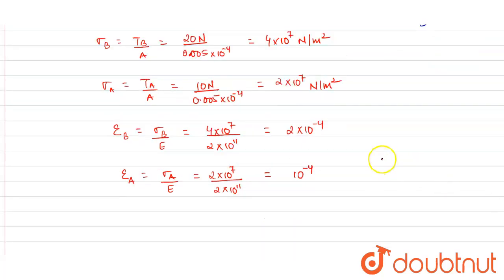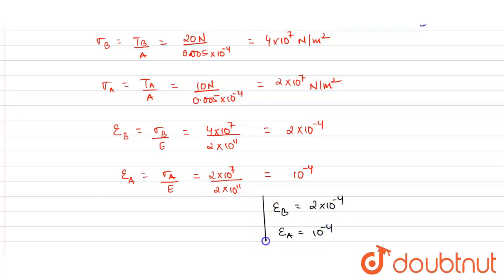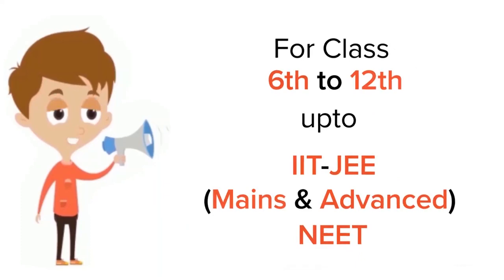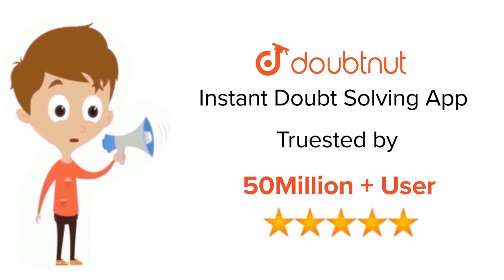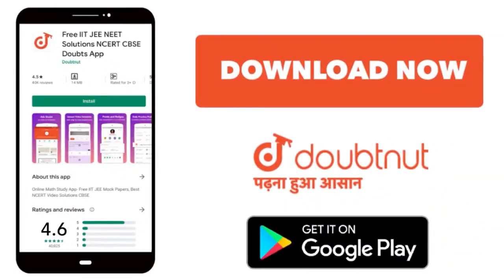So the final answers are: strain in wire B = 2×10⁻⁴, and strain in wire A = 10⁻⁴. This is the required answer. Thank you. For Class 6 to 12, IIT JEE and NEET level — trusted by more than 5 crore students. Download DoubtNet app today.